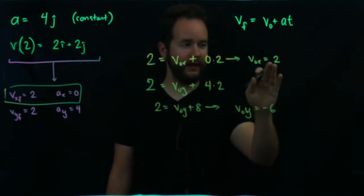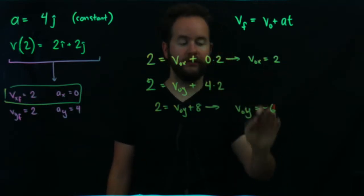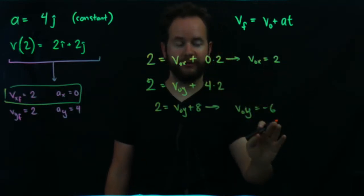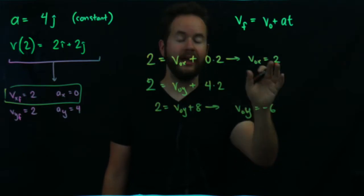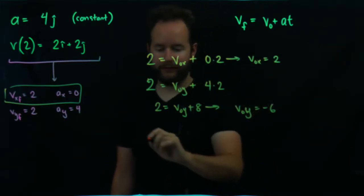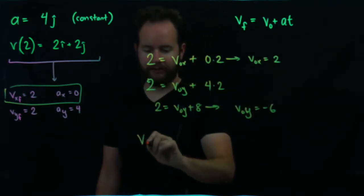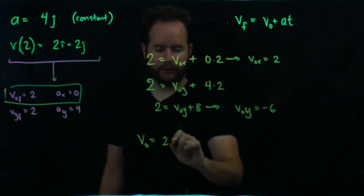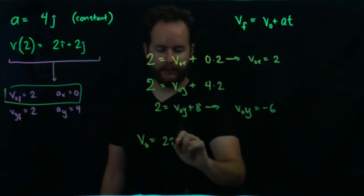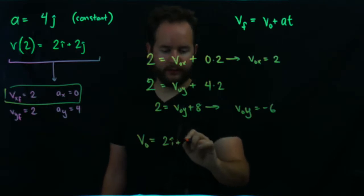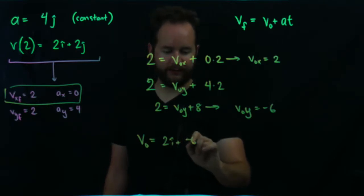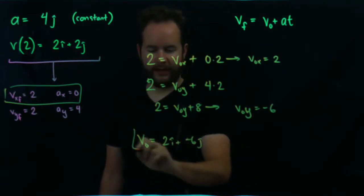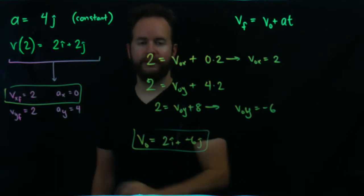So v naught y equals negative 6. The velocity in the x direction is 2 and the initial velocity in the y direction is negative 6. So the initial velocity would be 2 i-hat minus 6 j-hat, and that is your final answer.